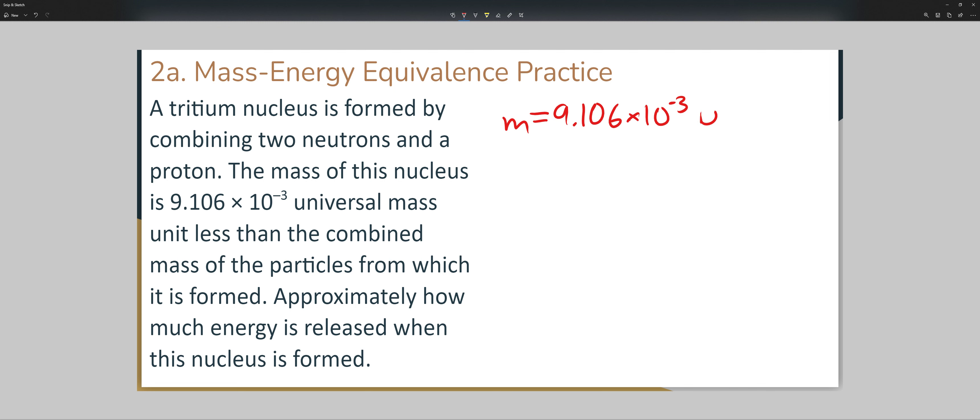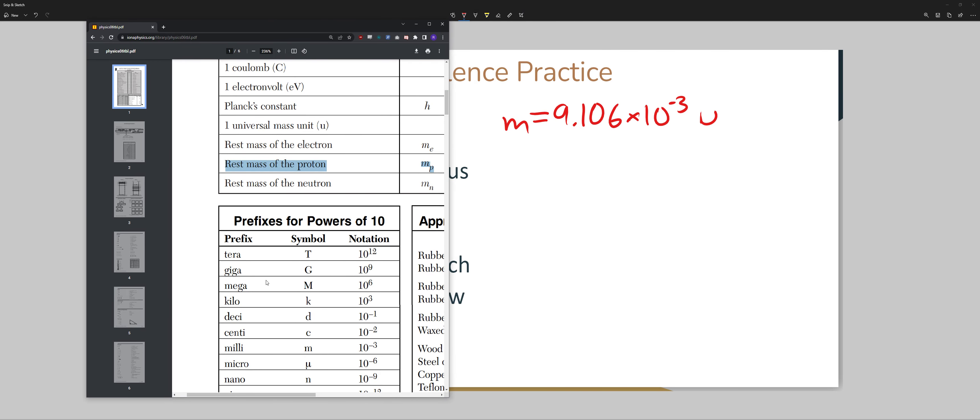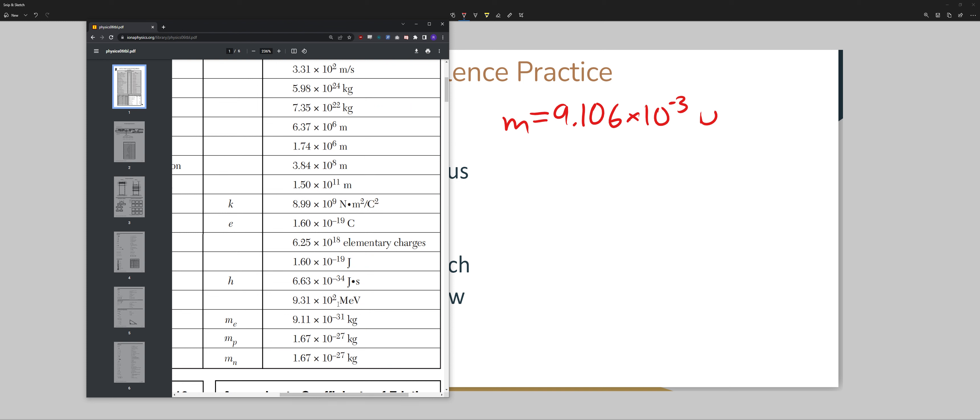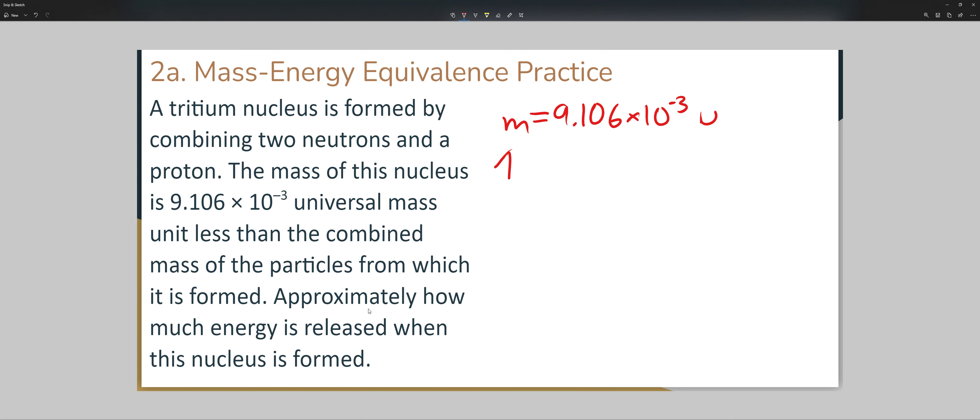They want to know when this nucleus is formed, what is the combined mass that was lost? We need to calculate how much energy was released when the nucleus was formed. This is the amount of mass lost. If you go to your reference table, one universal mass unit U is equal to 9.31 times 10 to the 2 mega electron volts.